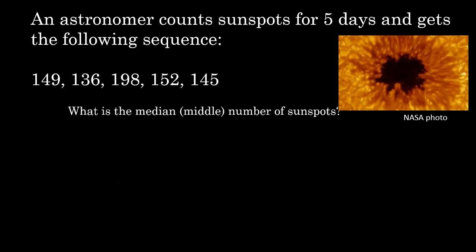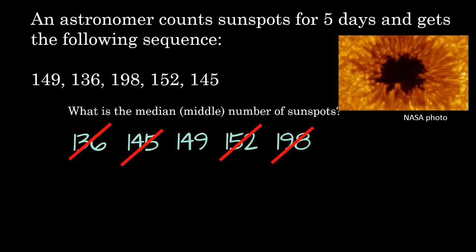What is the median or middle number of the sunspots? The first thing we need to do is write the numbers in numerical order. I like to write them from smallest to largest. So we'll have 136, 145, 149, 152, and 198. The next step is to cross off from both ends until we can't cross off anymore. Crossing off, crossing off, and it turns out that 149 is our median. That's our very middle number.